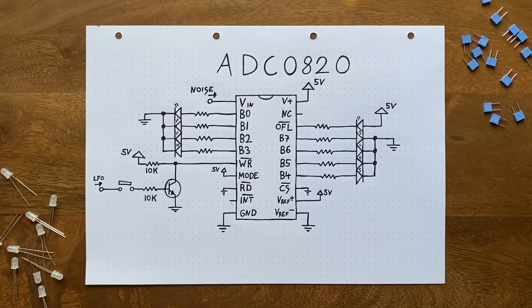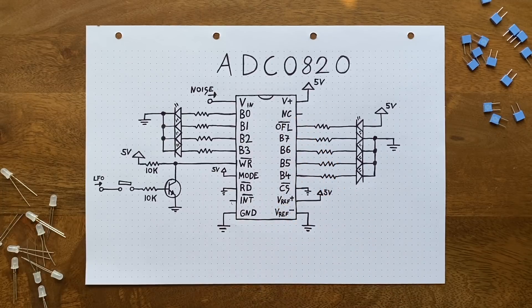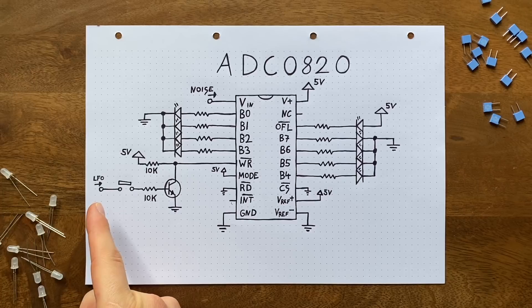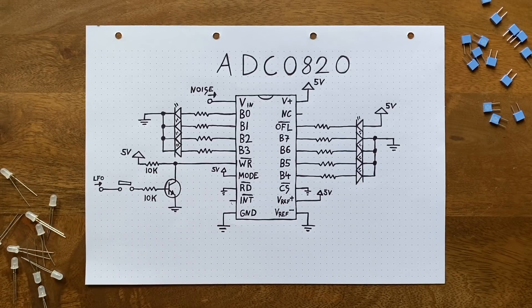For every trigger, the chip will sample the noise at that moment and send out a corresponding binary value on these 8 outputs. And because it will hold that binary data until the next trigger comes in, we can implement a nice visual flourish here. I'll be sending in a very fast LFO that constantly re-triggers the sampling and conversion while I push this button. Then when I let it go, we get our random number.